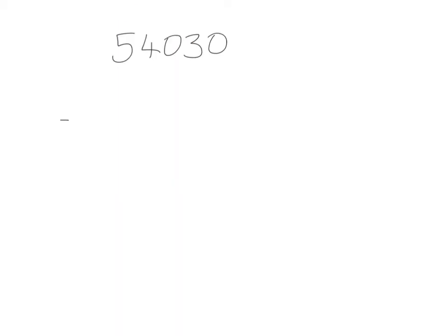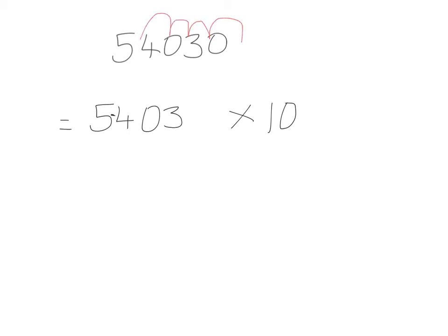Let's have a look at this next question: 54,030. Step 1 — write down all the digits from the first non-zero digit up to and including the last non-zero digit. The first non-zero number is 5 and the last is 3, so I write down 5, 4, 0, 3 — times 10 to the power of something. Step 2 — put a decimal point in between the first two numbers. Then count in from the end: 1, 2, 3, 4. I've moved four places, so it's 5.403 times 10 to the power of 4.